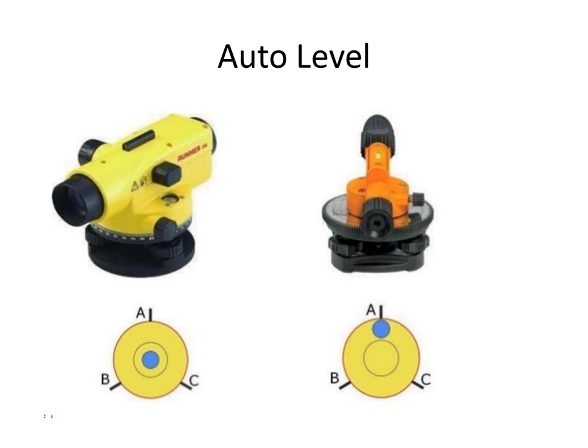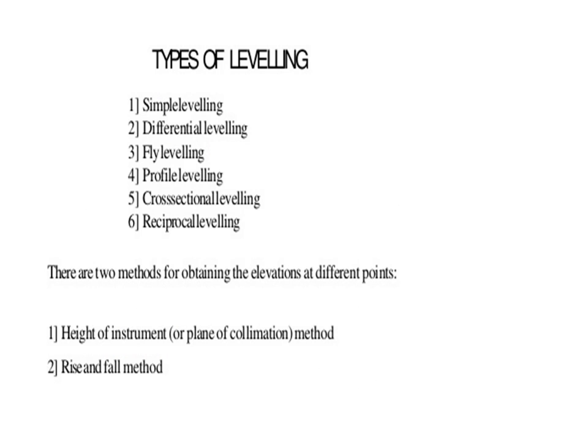This slide refers to the upper level with figures showing the three foot screws and the position of the bubble at center. The types of leveling are: simple leveling, differential leveling, fly leveling, profile leveling, cross section leveling, and reciprocal leveling. These are the methods for obtaining elevation at different points. Generally, elevations are determined by making use of two methods: the height of instrument method (also called the plane of collimation method) and the rise and fall method.